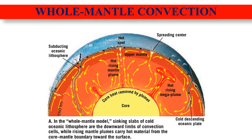The first model is the whole mantle convection model, also called the plume model. A group of researchers favors this model, in which the cold oceanic lithosphere sinks to greater depths and stirs the entire mantle. This model suggests that the ultimate burial ground for subducting lithospheric slabs is the core-mantle boundary near the D-double-prime layer, also known as the slab graveyard.